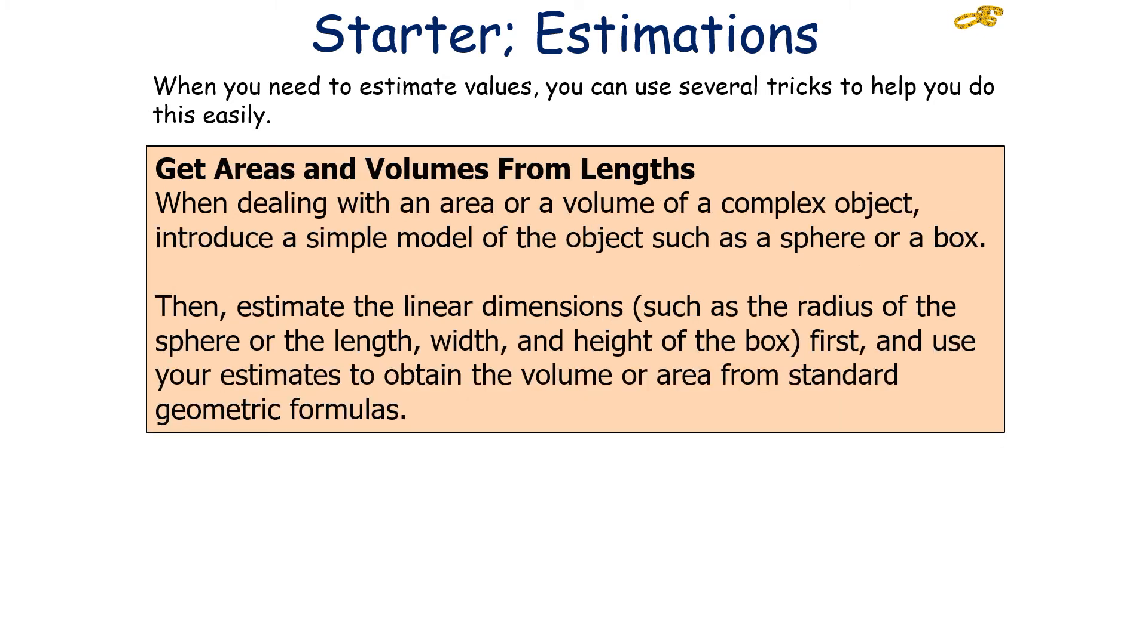Another trick to use is to get areas and volumes from lengths. When dealing with an area or volume of a complex object, introduce a simple model of the object, such as a sphere or a box. Then estimate the linear dimensions, like the radius of the sphere, or the length, width, and height of the box first, and use your estimations to obtain the volume or area from standard geometric formulae. For example, if you had to estimate the area of a door, you can estimate the length of a door easily, you can estimate the width of a door easily, so you'd multiply the two values to get your estimation for your area.